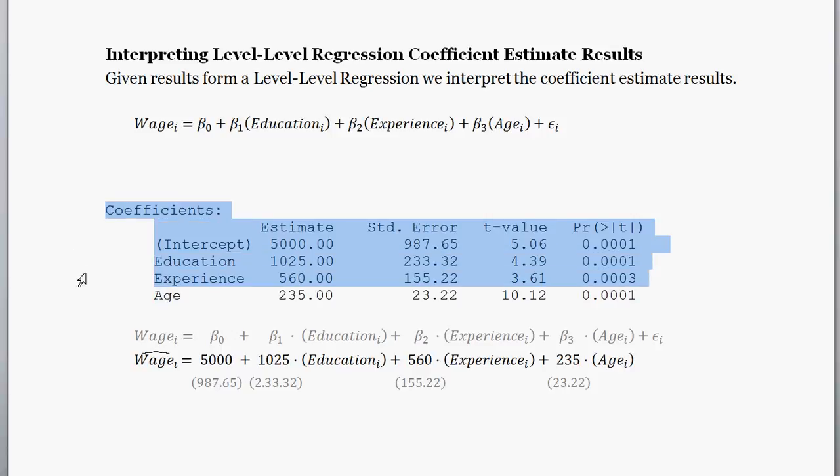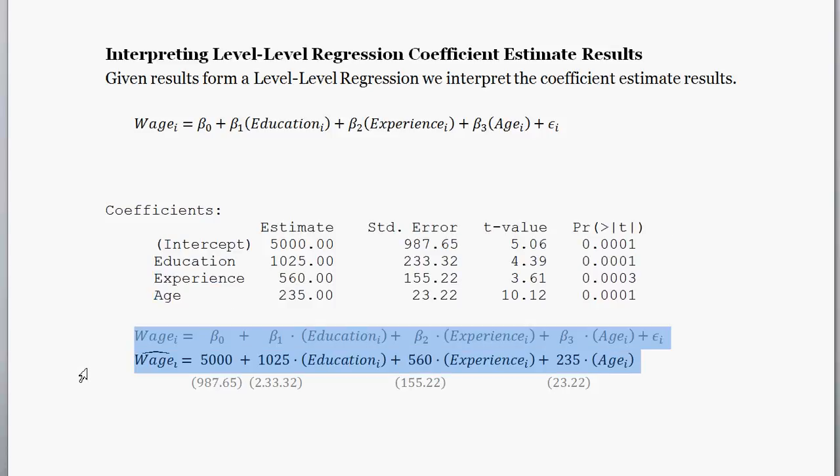This kind of result right here is the typical kind of output that you'll get from an R software regression. And then kind of putting them closer into terms of the model, we get the following.